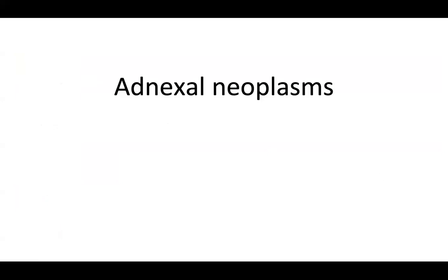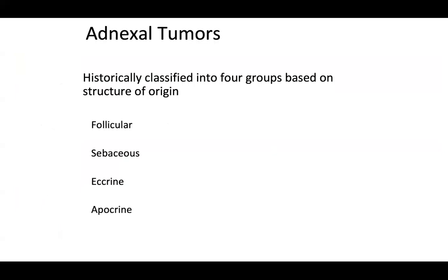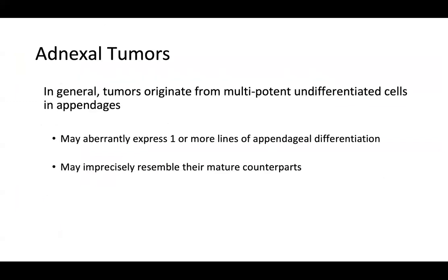We are going to go over adnexal neoplasms for this lecture. Adnexal tumors are historically classified into four groups based on the structure of origin: follicular, sebaceous, eccrine, and apocrine. In general, tumors originate from multipotent undifferentiated cells and appendages. They can aberrantly express one or more lines of appendageal differentiation, and may imprecisely resemble their mature counterparts.